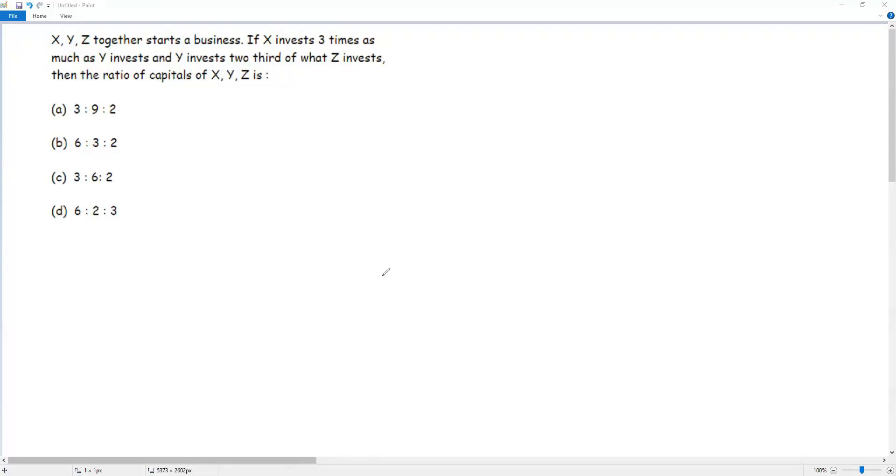X, Y, Z together start a business. If X invests three times as much as Y invests and Y invests two-third of what Z invests, then the ratio of capitals of X, Y, Z is.